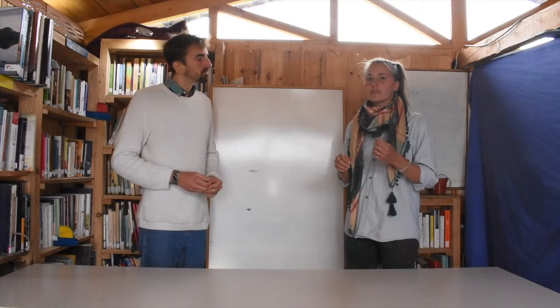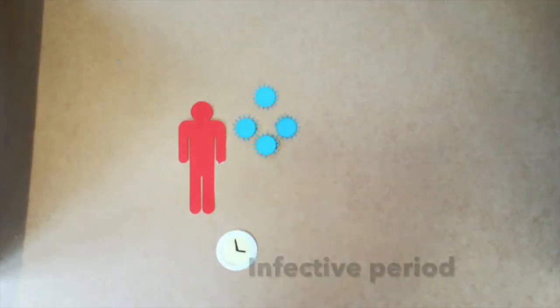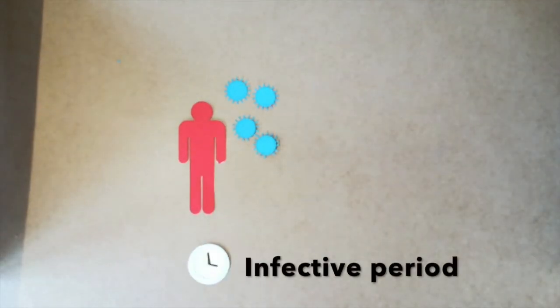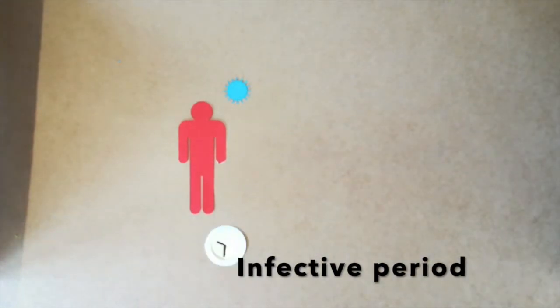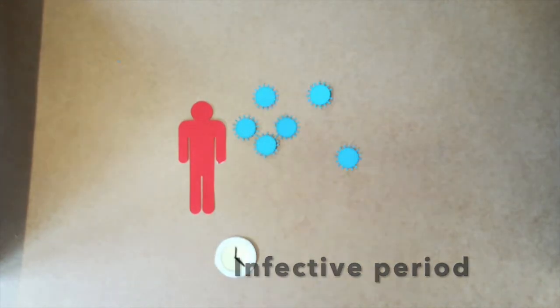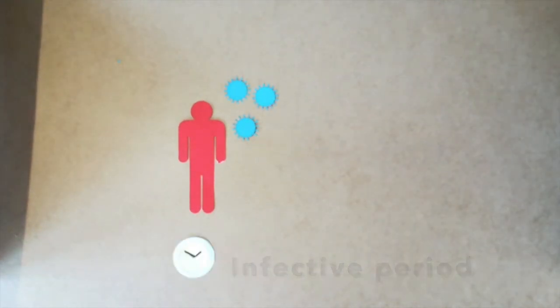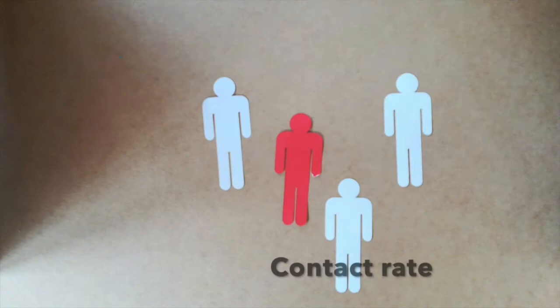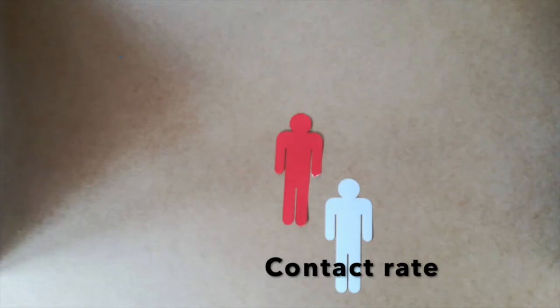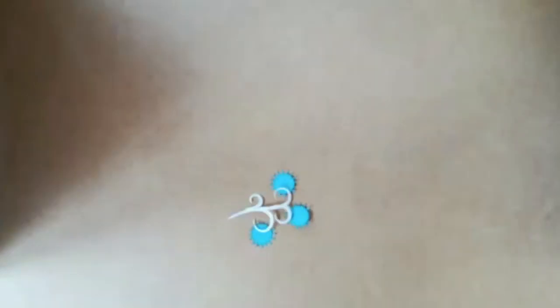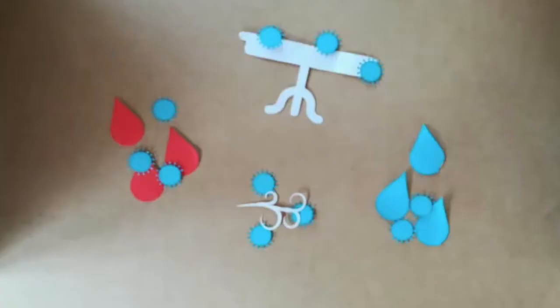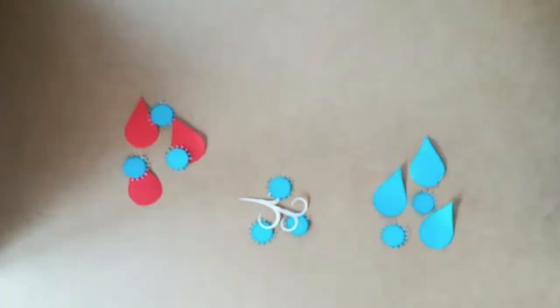To calculate this number, it depends on different factors. The first factor is the infective period — how long a sick person can transmit the disease to other people. The longer the infected period, the higher the contagious rate. The second factor is the contact rate: how many people do sick people meet, and how close together they get. Finally, the way of transmission — viruses transmitted through air will have a higher contagious rate than those transmitted, for example, through blood.